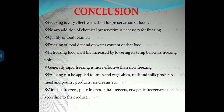In conclusion, freezing is a very effective method of food preservation. No addition of chemical preservatives is necessary and food quality is retained. Freezing of food depends on the water content of that food. Rapid freezing is more effective than other types of freezing. Freezing can be applied to fruits, vegetables, milk products, meat and poultry, and ice cream products. Air blast freezers, plate freezers, and spiral freezers are used for these types of freezing systems.